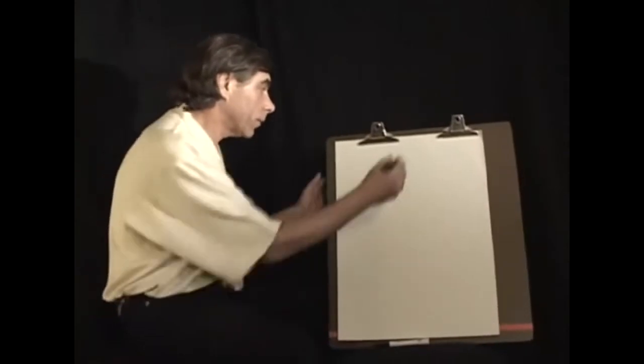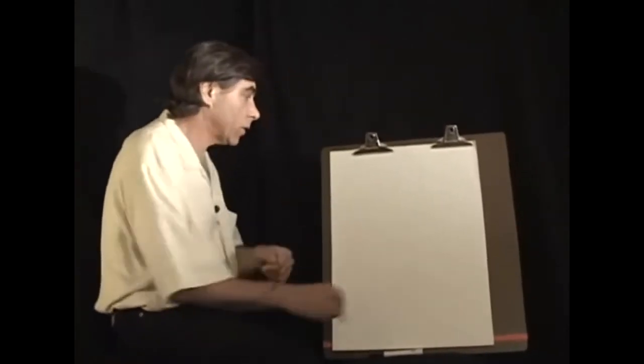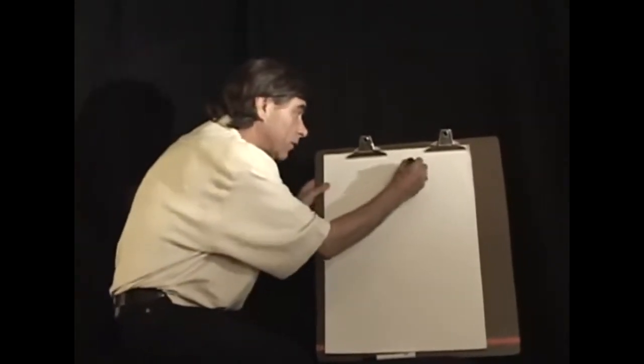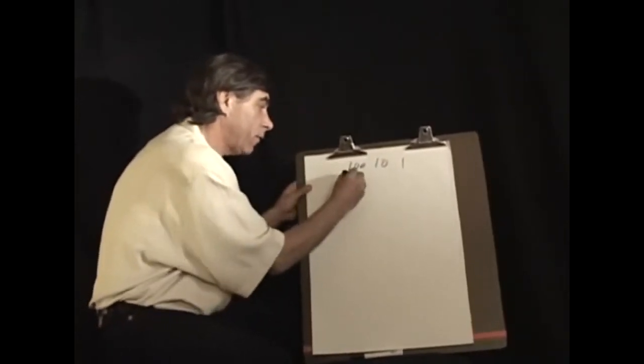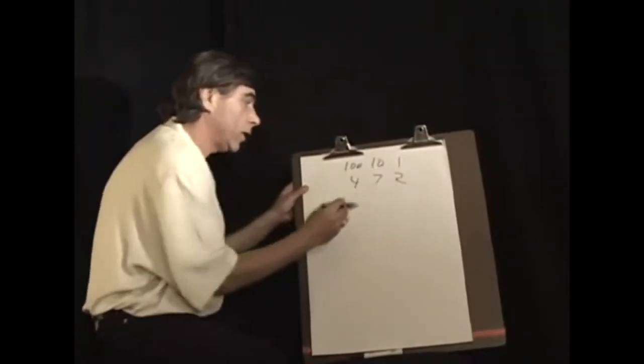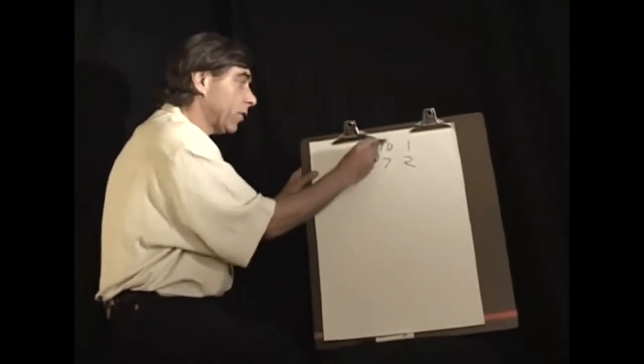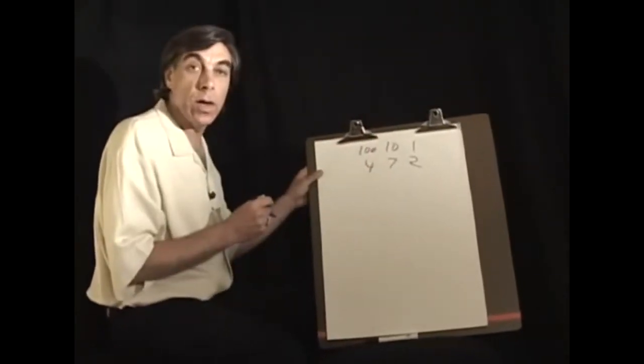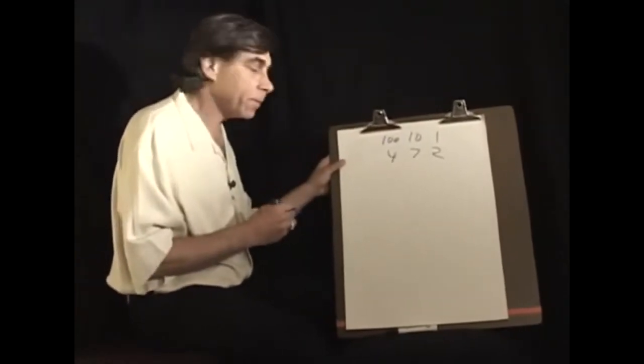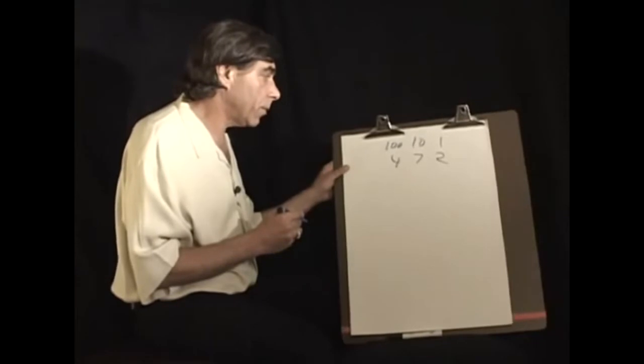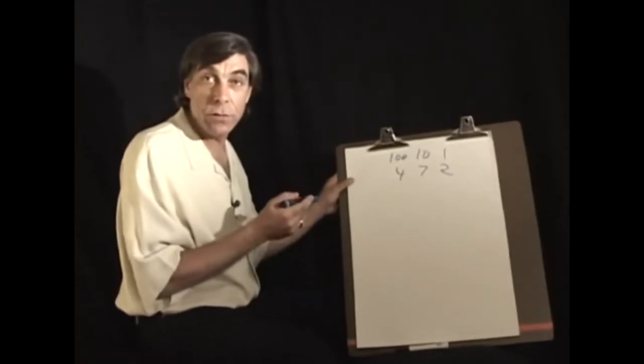Today, when we write a number, we work in powers of ten and place value. We have the ones, the tens, the hundreds columns, so if you wanted to say 472, we're really saying four hundreds, seven tens plus two ones. But the way that this occurs in modern computers is not place ten value, but place two value.